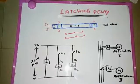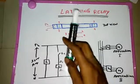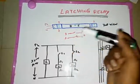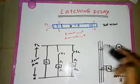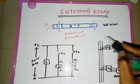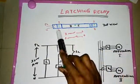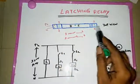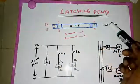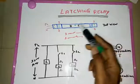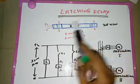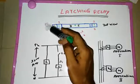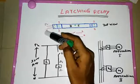Hi guys, today we are going to see latching relays — their operation and connections. The connection diagram of the latching relay has a top view on top and a simple connection on the downside. This is a latching relay for the model of Hager and Schneider.